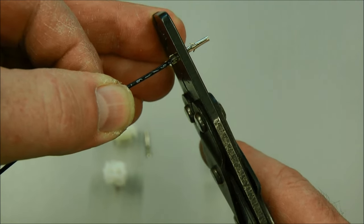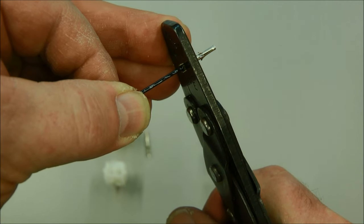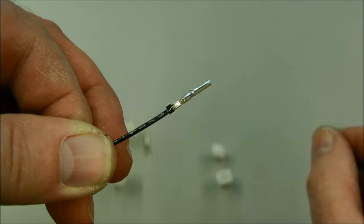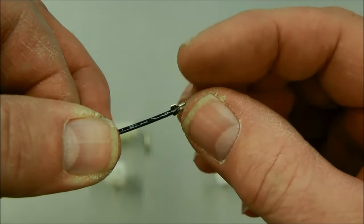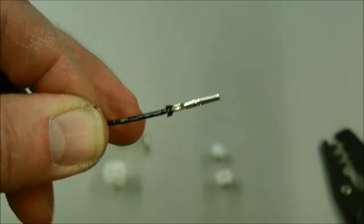The insulation just goes up to the tool itself. And then crimp it. And you can see the wire is secured. Give it a little pull test. Make sure it's all tight.